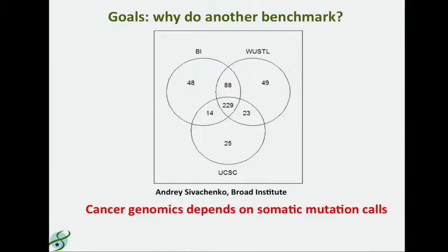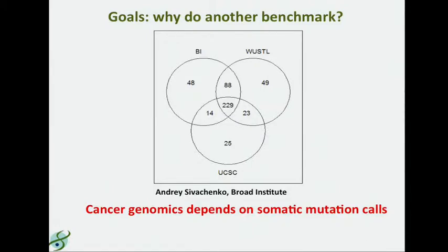There's still a lot of discordance in the mutation calls that we get. This is a representative example from a previous benchmark exercise. Shown in this Venn diagram are calls on the same pair of tumor-normal BAM files made by the Broad Institute, by WashU, and by UCSC. You can see the concordance and discordance here — the majority of mutations are concordant between at least two of the centers, but there's still a lot of discordance happening. This is important since mutation calling is fundamental to cancer genomics, which depends on the fidelity of mutation calling algorithms.